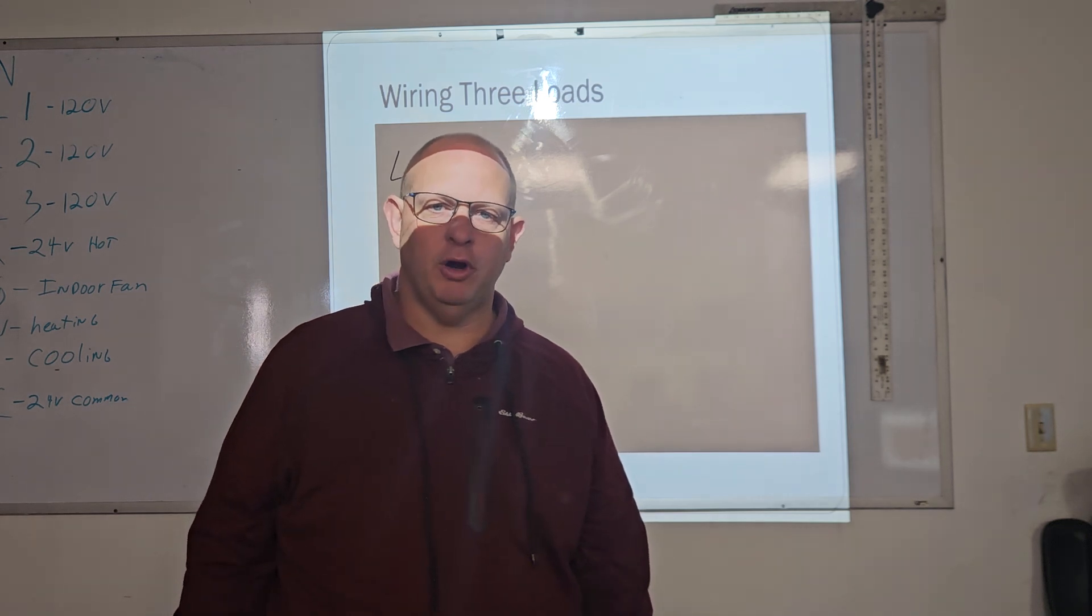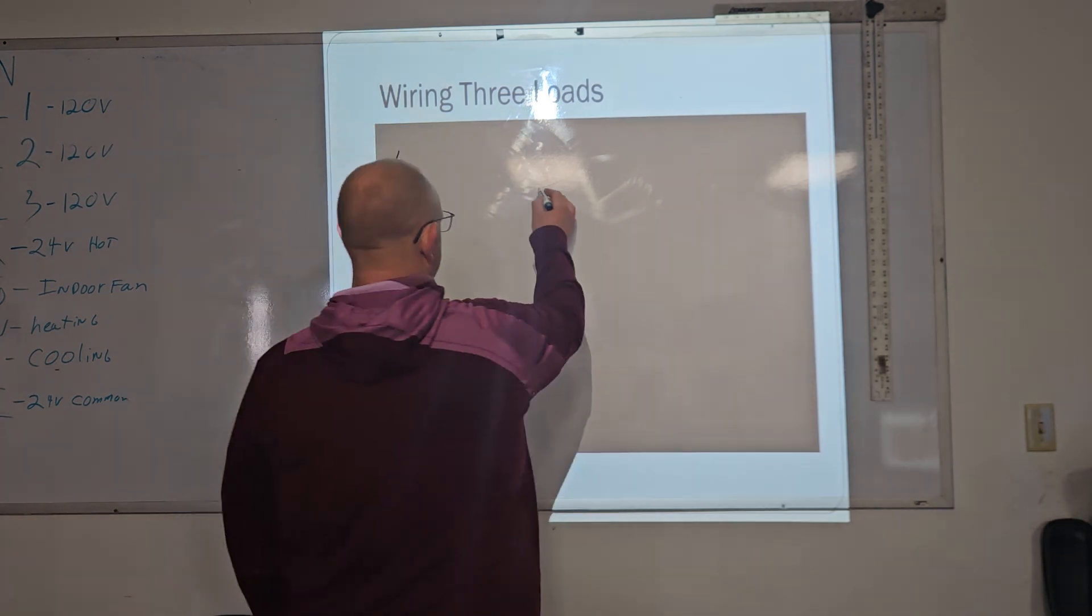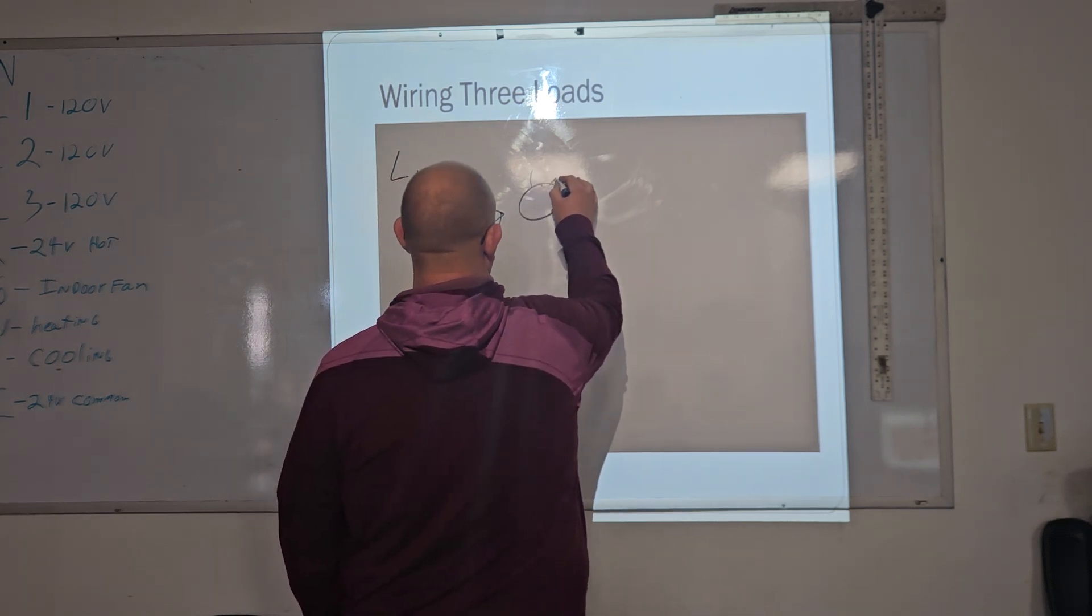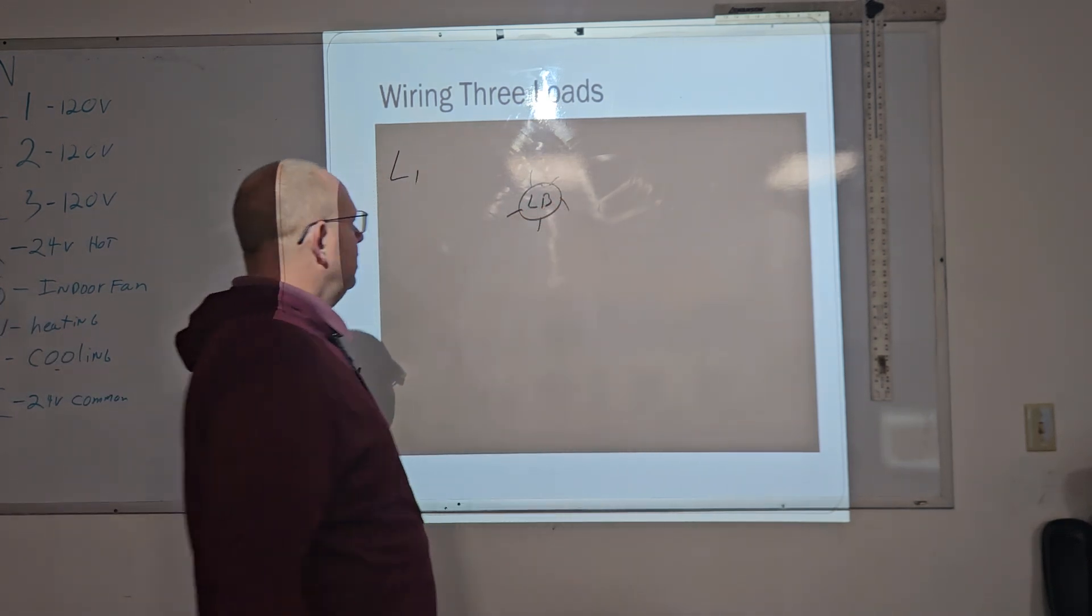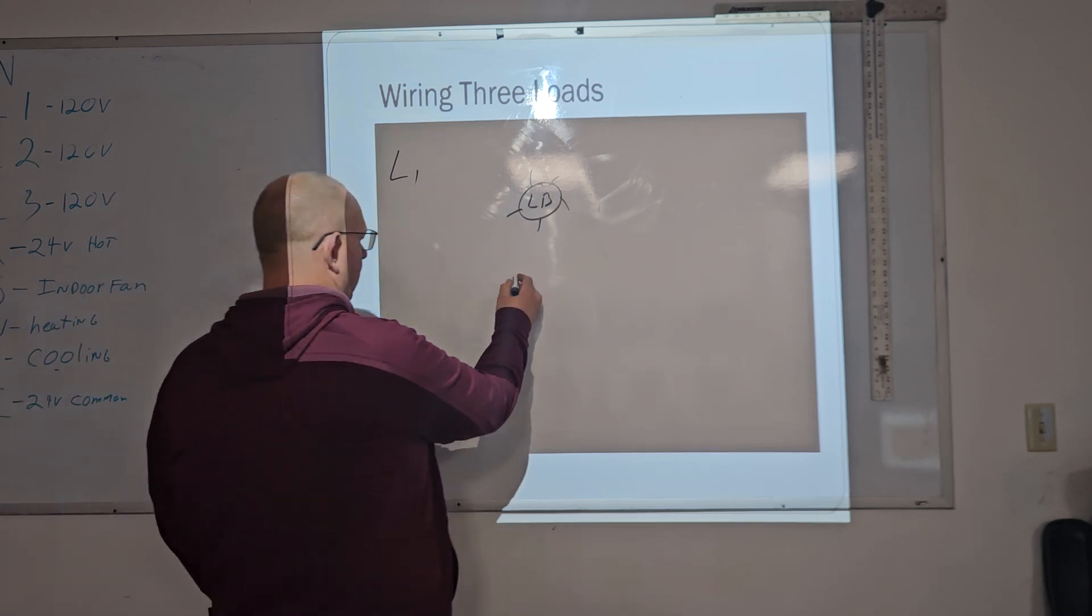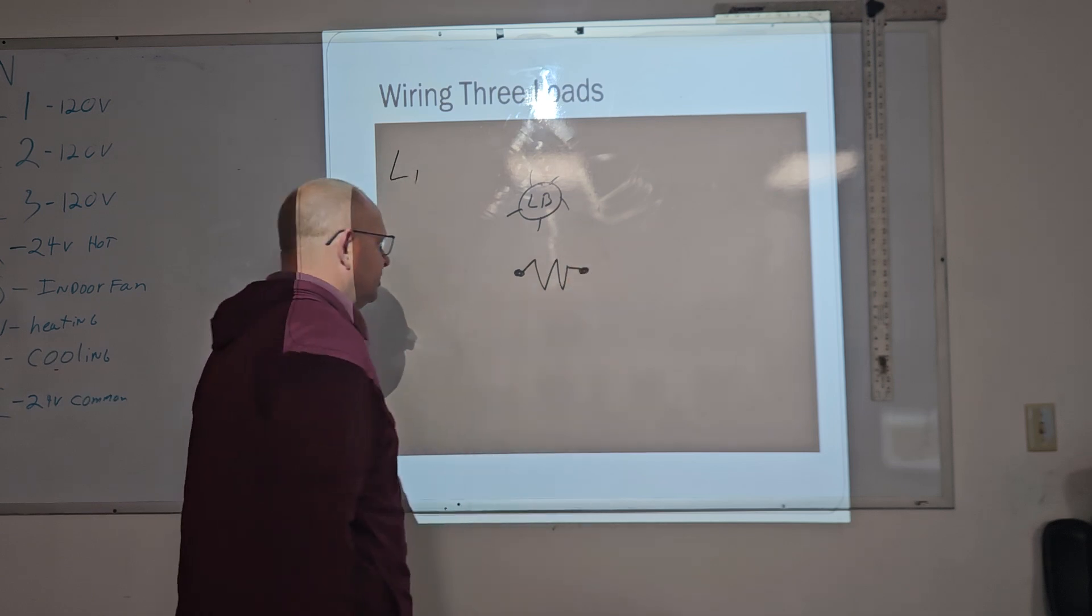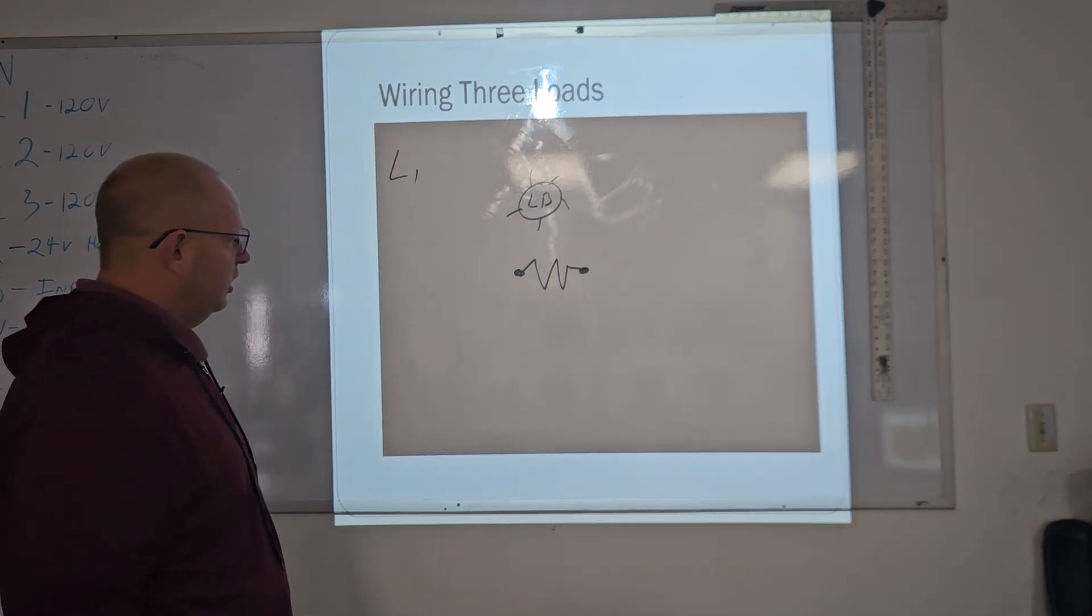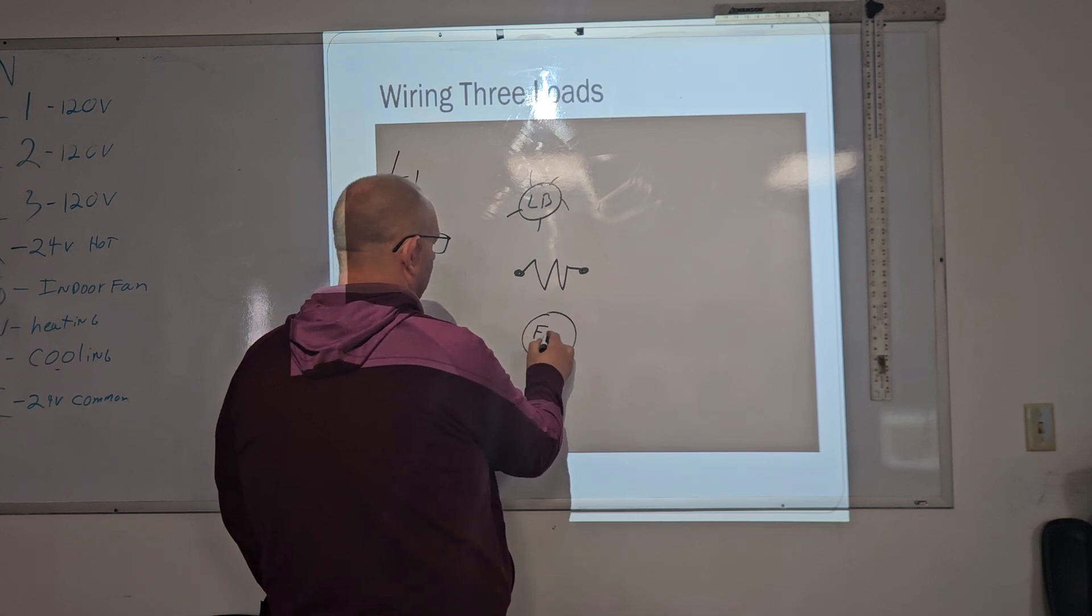Now there's three loads that we want to hook up. Let's go ahead and put those three loads up here. We have our light bulb, our LB. The next one is our electric heater, so we'll just make an electric symbol for an electric heater as it's going through. And then our next one will be a fan motor.